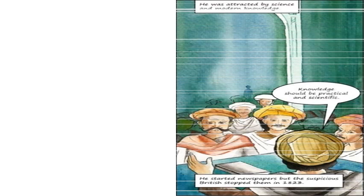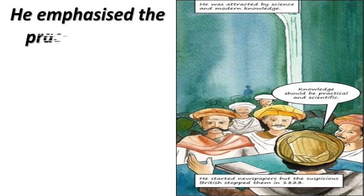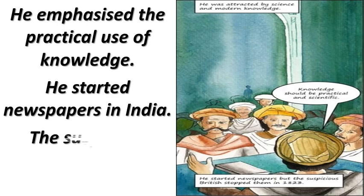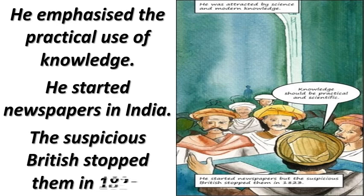Raja Ram Mohan Roy was attracted by science and modern knowledge. He said: 'Knowledge should be practical and scientific.' He started newspapers, but the suspicious British stopped them in 1823. He called upon people to feel proud of their ancient culture and rid society of silly superstitions. He pointed out that all religions preached the same thing, understood the importance of science and modern knowledge, and emphasized the practical use of knowledge.